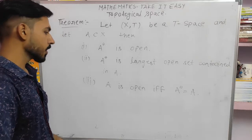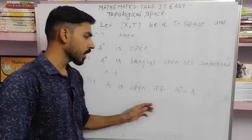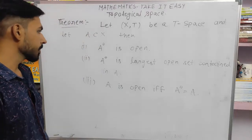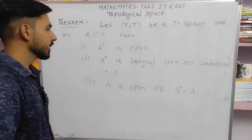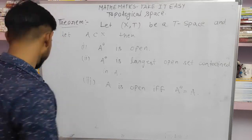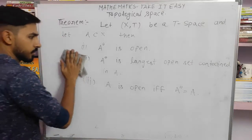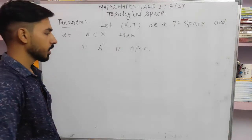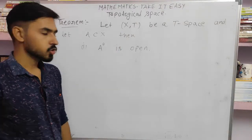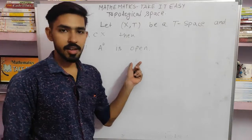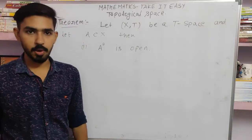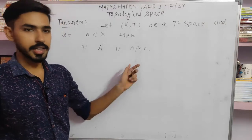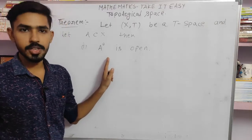The third part we have to prove is that A is open if A interior equals A. To show A interior is open, we will show that A interior is a neighborhood of each of its points — because every open set is a neighborhood of each of its points.